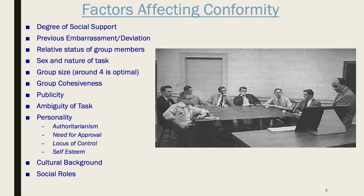As group size increases, conformity pressure increases. But once you get up to around four or five individuals, making the group larger really doesn't have much more of a noticeable effect — conformity pressure peaks at around four or five people. The more cohesive a group is, the stronger the conformity pressures. When everybody likes each other and there's a feeling of camaraderie, there's pressure to maintain that harmony and present a united front.